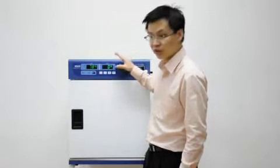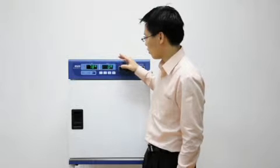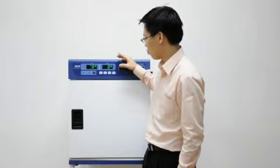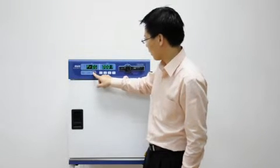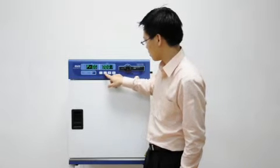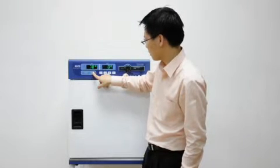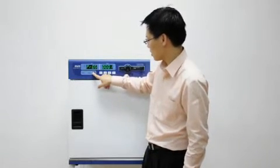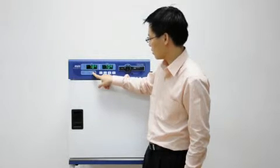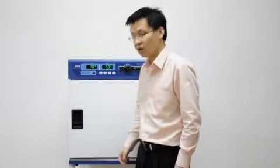So assuming I have configured the temperature and duration settings for program one, what I can do now is to select program one, and to operate program one, I have to press this key and hold down for five seconds. So now program one is in operation.